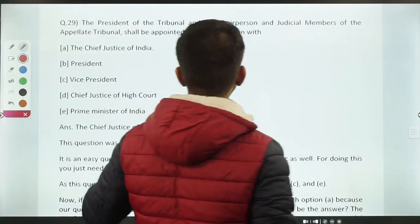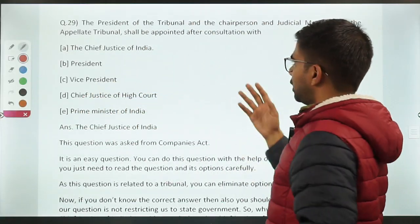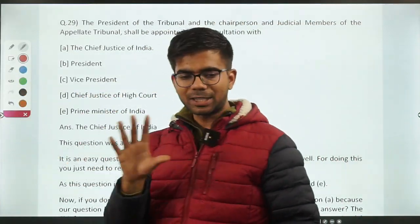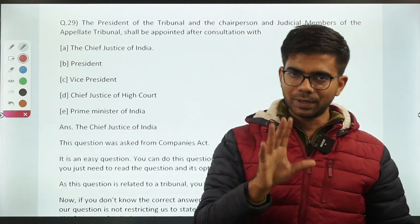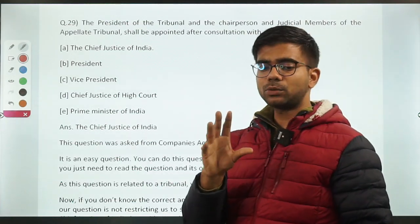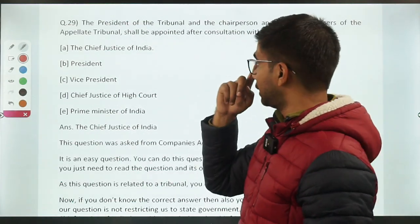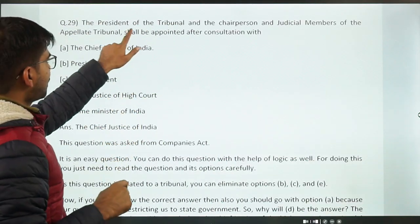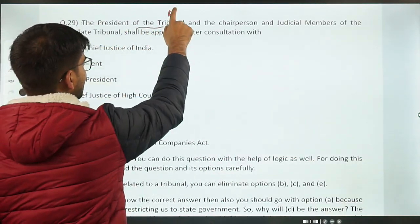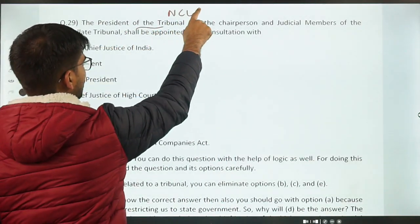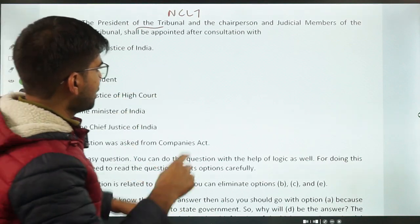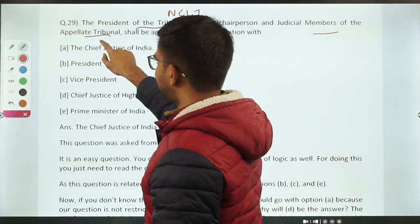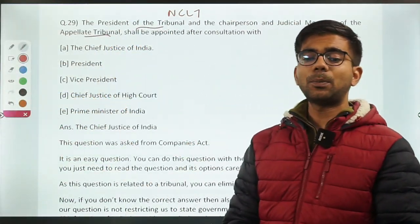Question 29 was about the President or Chairperson of the Tribunal — a Companies Act question. Although factual, you can eliminate options logically. The question relates to NCLT (National Company Law Tribunal) and NCLAT (National Company Law Appellate Tribunal), involving appointments in consultation with the Chief Justice of India.